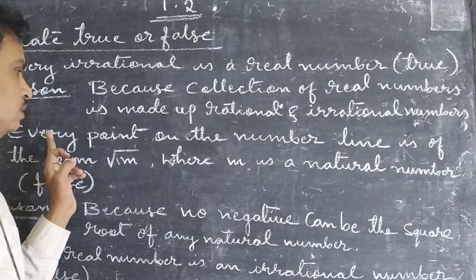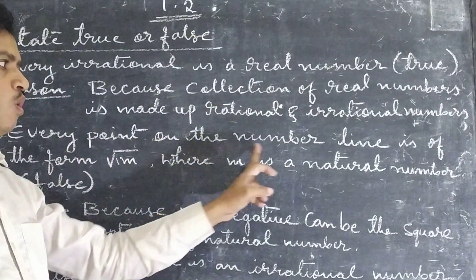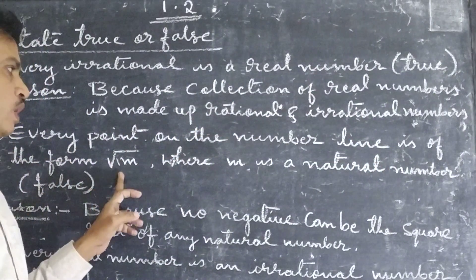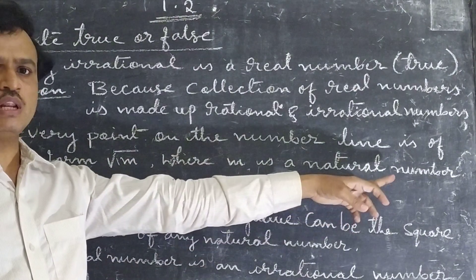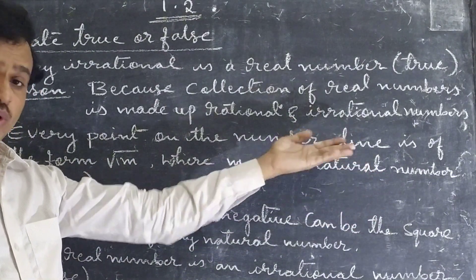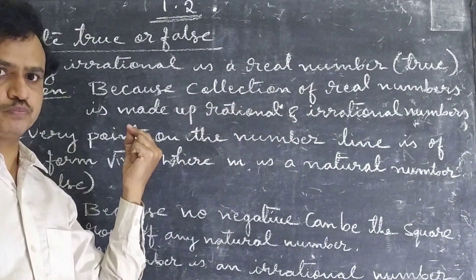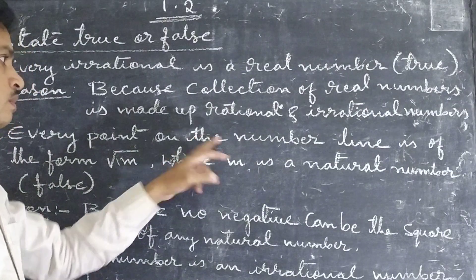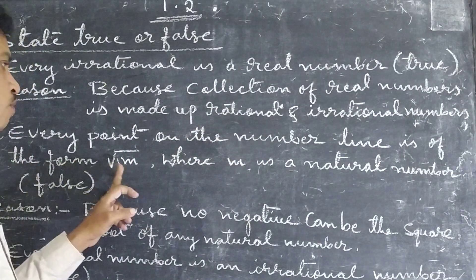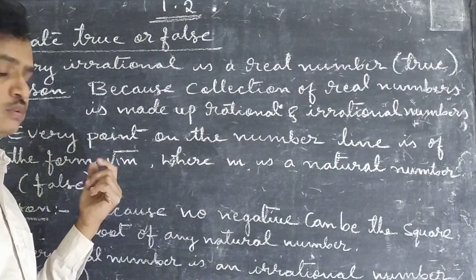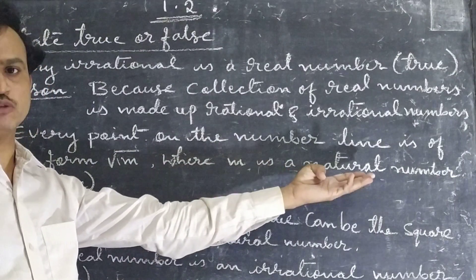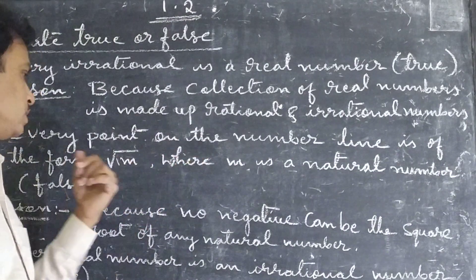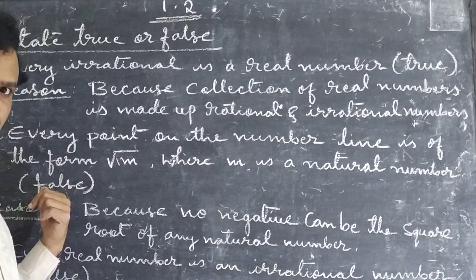Second question: Every point on the number line is of the form square root of M, where M is a natural number. So every point on the number line is of the form square root of M. M means we are taking a natural number — square root of 4, square root of 5. According to this question, it is false.